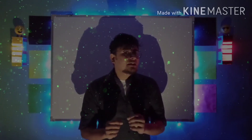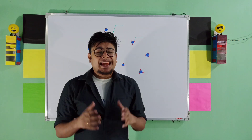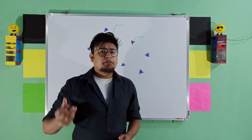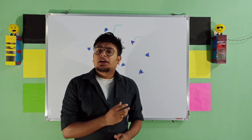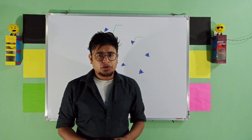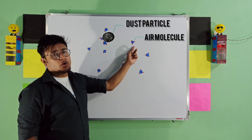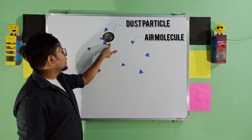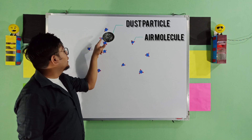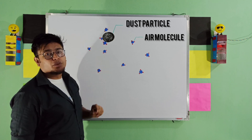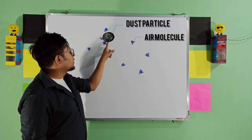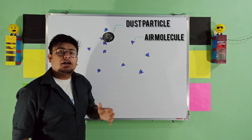Have you ever wondered why a dust particle goes in a random path rather than taking a straight path? It is because as the dust particle moves up in the air, it goes on random collisions with the air molecules. For example, in this particular case, this is the dust particle and this is the air molecule. So when the dust particle wants to go on this side, it goes on collision with these two air molecules, pushing it to the other direction.